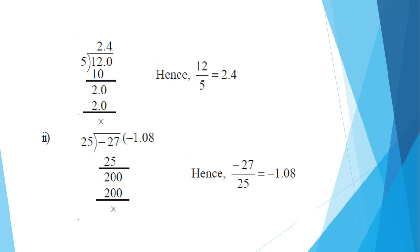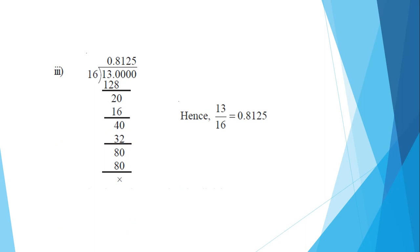Let us solve the problems together. 12 by 5 gives 2.4. For minus 27 by 25, we get minus 1.08. The remainder after the division steps is 0.08, and ultimately we reach a remainder of zero.